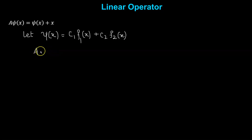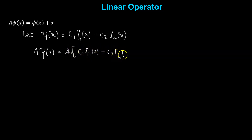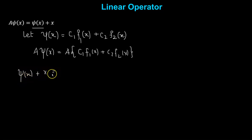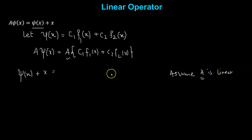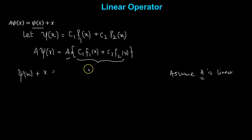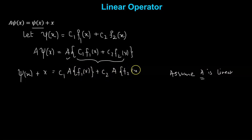Let's apply operator a on both sides. So we have a operating on psi(x), which equals a operating on c1 times f1(x) plus c2 times f2(x). Beginning with the left-hand side, a operating on psi(x) gives us the function itself — psi(x) plus x, by definition. Now we assume that a is linear. If it is linear, then a operating on the linear combination gives us c1 times a acting on f1(x) plus c2 times a acting on f2(x).